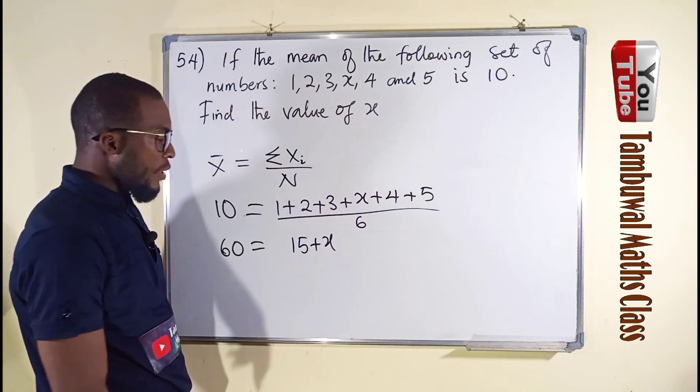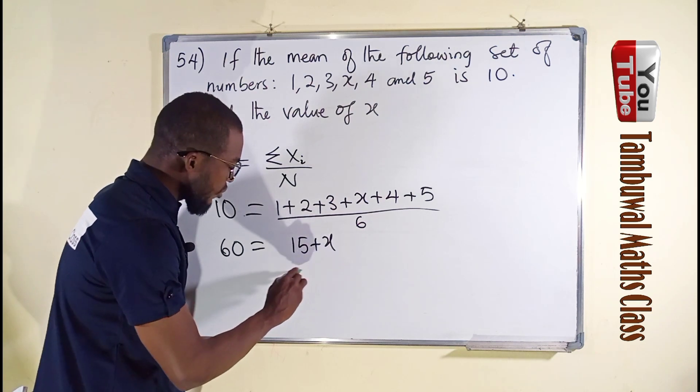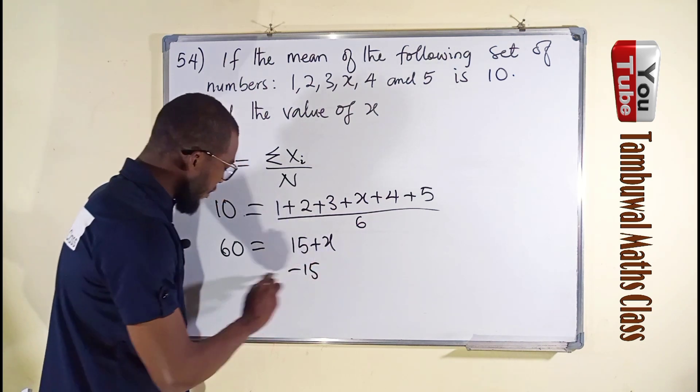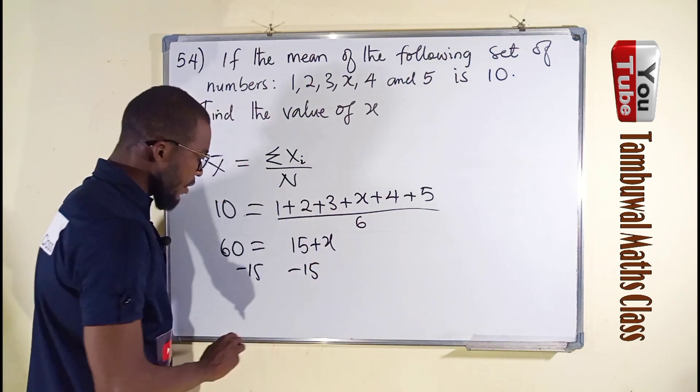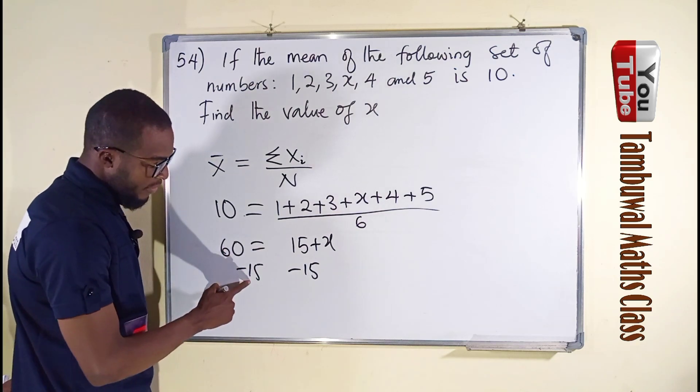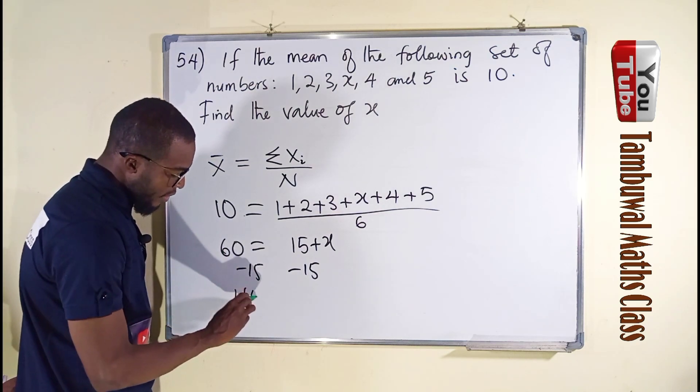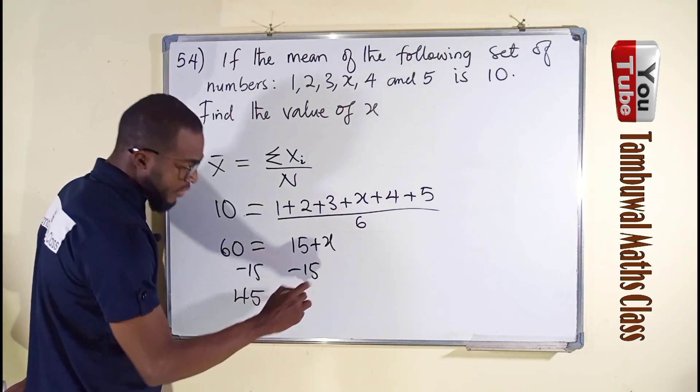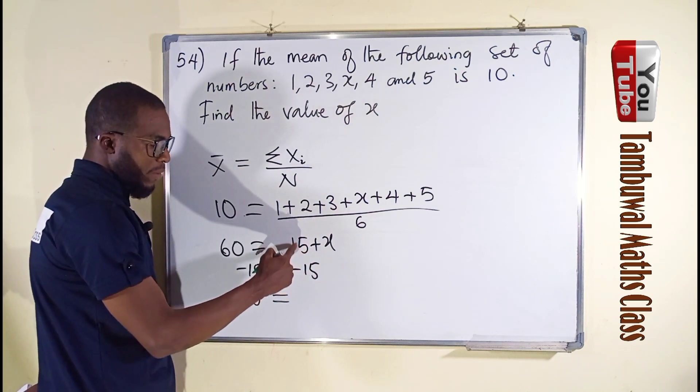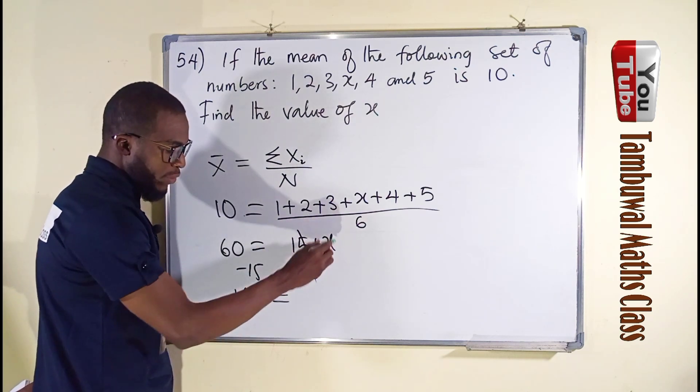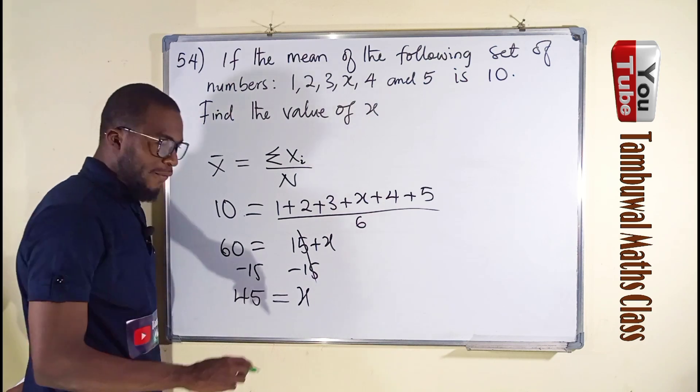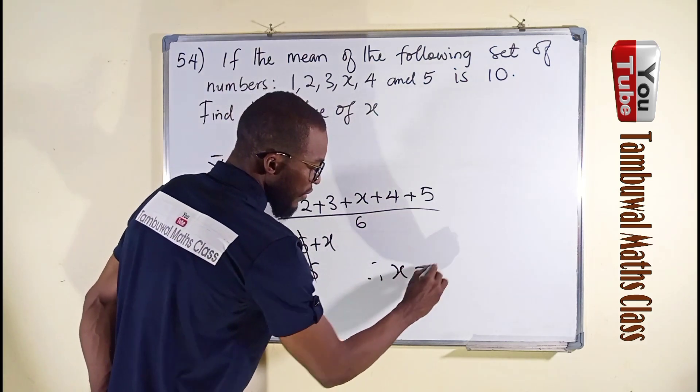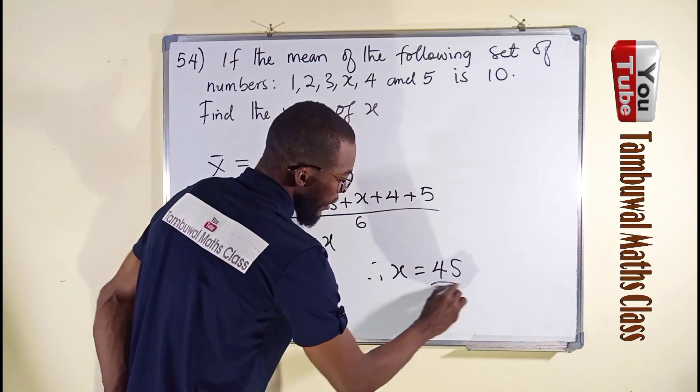Now to find the value of x, we can subtract 15 from both sides. Subtract 15. And 60 minus 15 is 45, equals 15 minus 15 is 0, leaving only x. And therefore, the value of x is equal to 45 as required.